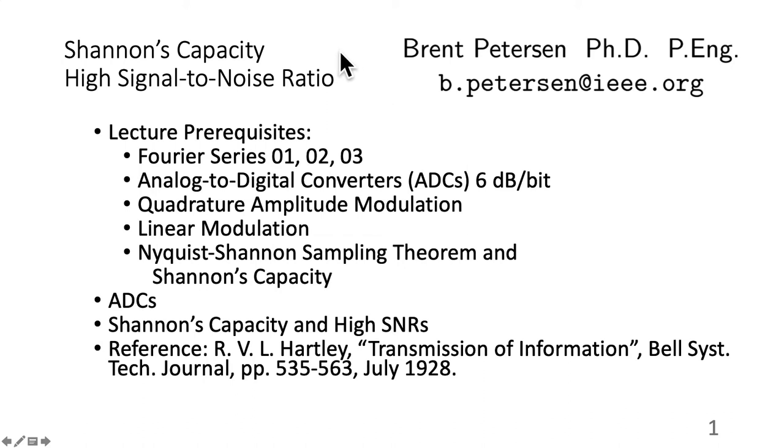In this lecture, I'm going to look at Shannon's capacity in high signal-to-noise ratios. These are the lecture prerequisites: Fourier series, 6 dB per bit, SNR from analog to digital converters, quadrature amplitude modulation, linear modulation, the Nyquist-Shannon sampling theorem, and Shannon's capacity. We'll look at ADCs, Shannon's capacity in high SNRs, and the reference for this work is Hartley in 1928.